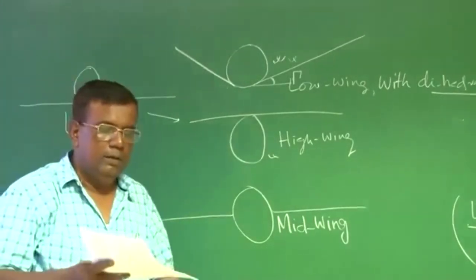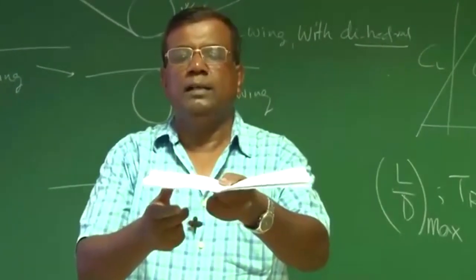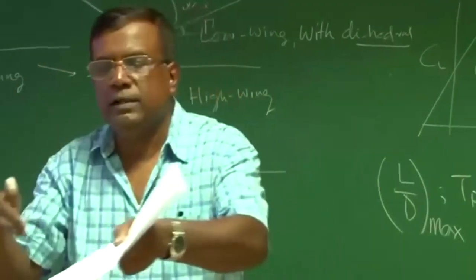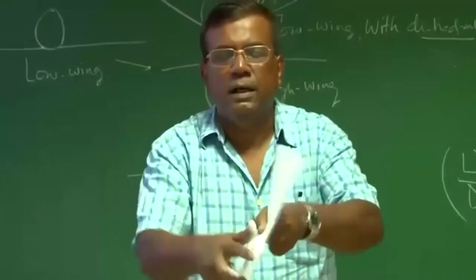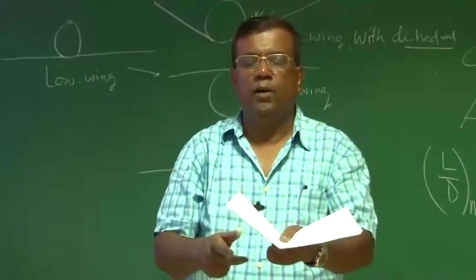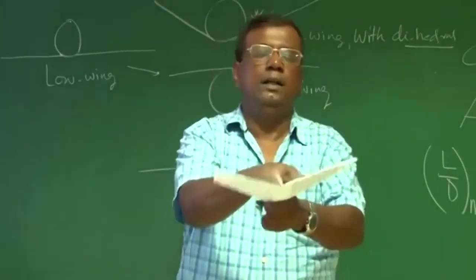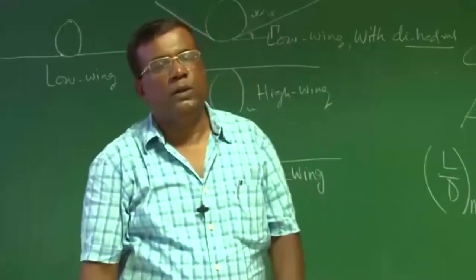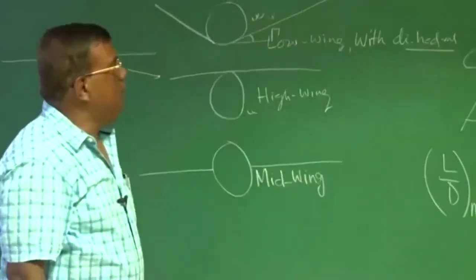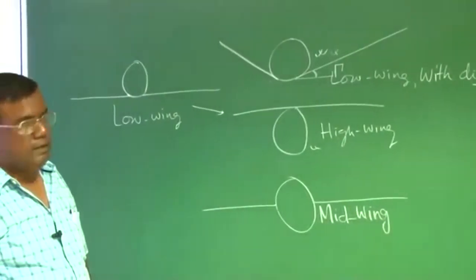So what does the dihedral angle do? Dihedral angle will be doing exactly the same as what high wing is doing in terms of effect. If there is a dihedral like this, suppose this low wing, as it banks and starts side slipping, air gusts in here, but if there is a dihedral, the air impinges here and it tries to take it back. So with dihedral, again you add lateral stability.